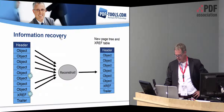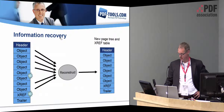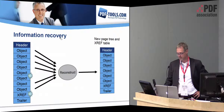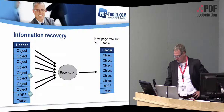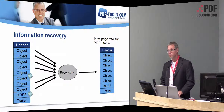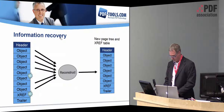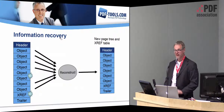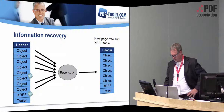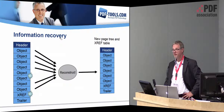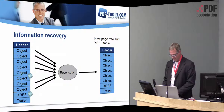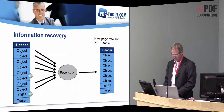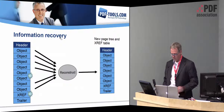One of the most often found types of damage is an invalid cross-reference table. In general this is not critical, and the tool can recover it by scanning through the file and rebuilding it from the found objects. If there are redundant objects, then the last one is used.